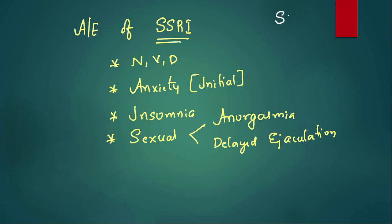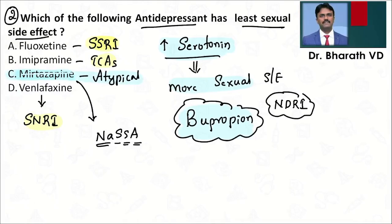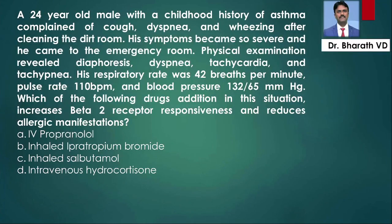Tell me in the comment section what drugs are called SNRIs — one starting with M and one starting with D, in addition to venlafaxine. The answer for this question is option C — mirtazapine.